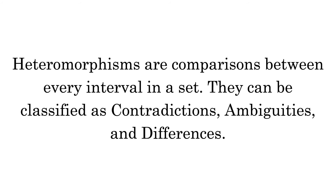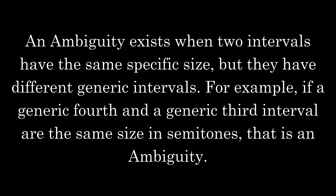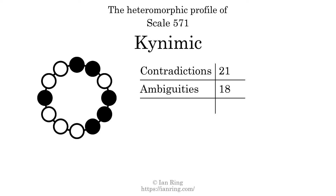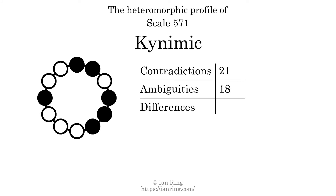Heteromorphisms are comparisons between every interval in a set. They can be classified as contradictions, ambiguities, and differences. A contradiction exists when a small generic interval has a bigger specific size than a larger generic interval — for example, if a generic third interval has a larger size in semitones than a generic fourth interval. The number of contradictions in this scale is 21. An ambiguity exists when two intervals have the same specific size but different generic intervals — for example, if a generic fourth and a generic third interval are the same size in semitones. The number of ambiguities in this scale is 18. A difference exists when two intervals have the same generic size but different specific sizes — for example, a major third and a minor third both have the same generic size but different sizes in semitones. The number of differences in this scale is 64.